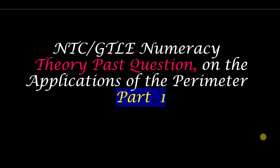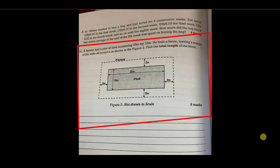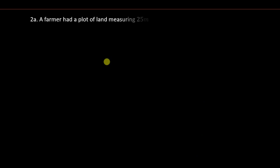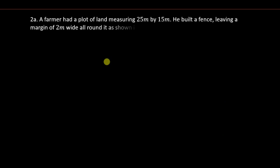In our previous discussion we looked at question 2a, so this time we're going to look at question 2b. A farmer had a plot of land measuring 25 meters by 50 meters. He built a fence leaving a margin of 2 meters wide all around it, as shown in figure 2. Find the total length of the fence.